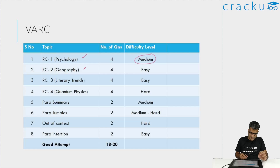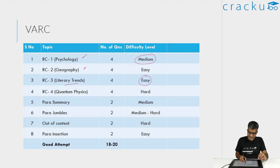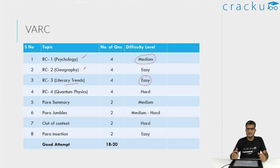Amongst the RCs, I first picked the psychology one and the geography RC to attempt. The psychology one, which had something to do with criminals and their intent to commit a crime, was slightly on the more difficult side to read — more difficult than I anticipated. But it was not very difficult overall. I felt this was on the medium side. There were two RCs which were definitely on the easy side, especially one about literary trends with a discussion about opera. That was a fairly easy set — people should definitely attempt it.